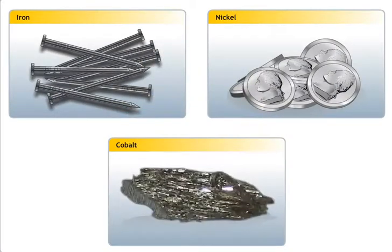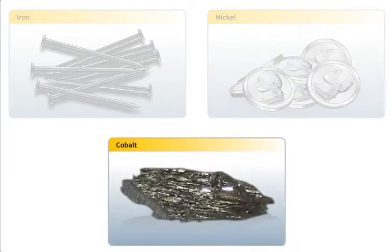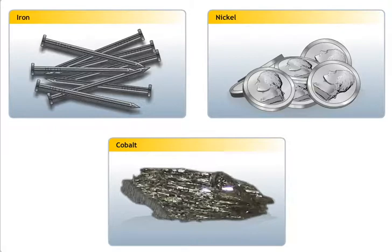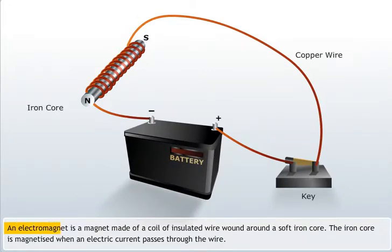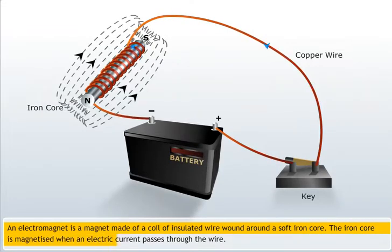Using electric current, you can create magnets out of metals like iron, nickel and cobalt. Magnets created using electric current are called electromagnets. An electromagnet is a magnet made of a coil of insulated wire wound around a soft iron core. The iron core is magnetized when an electric current passes through the wire. In other words, an electromagnet is a solenoid with an iron core.